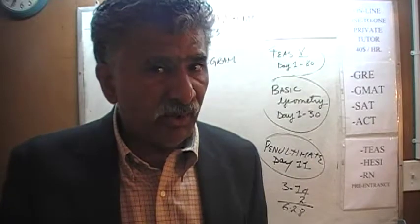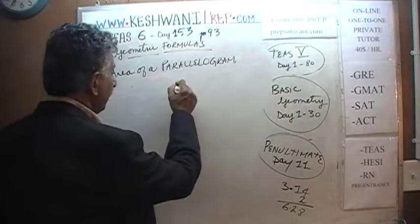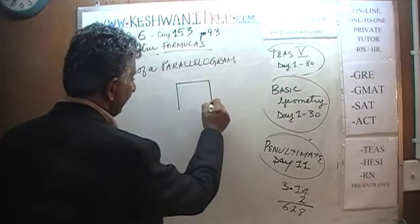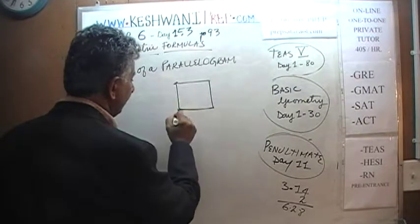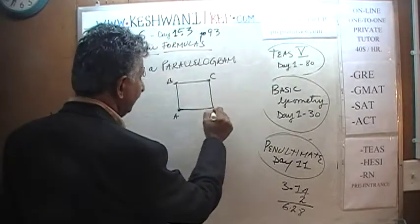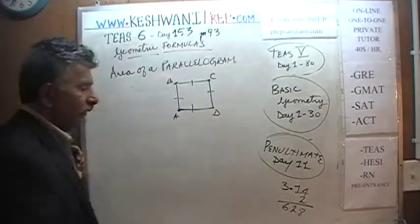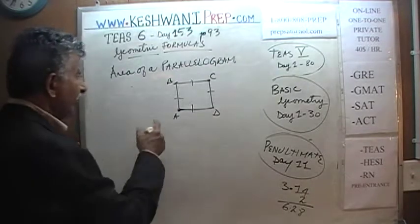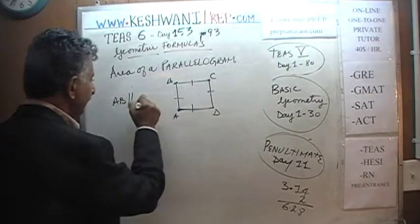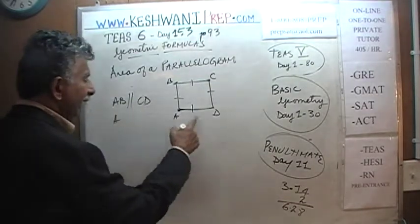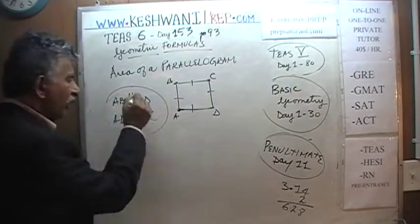What is a parallelogram? Did you know that a square is a parallelogram? The definition of a parallelogram is very simple: a parallelogram is where opposite sides are parallel. This side right here, A to B, A, B, C, and D, is a square — I am telling you it is a square because all four sides are equal. But in a parallelogram, opposite sides are equal: line AB is parallel to CD, and line AD is parallel to BC. That's the only requirement of a parallelogram.